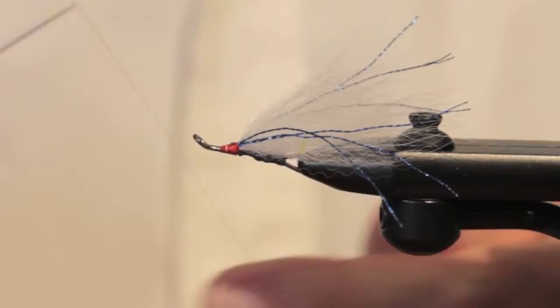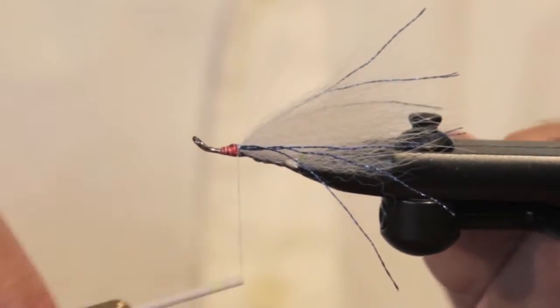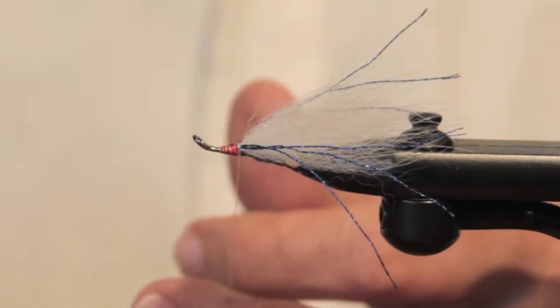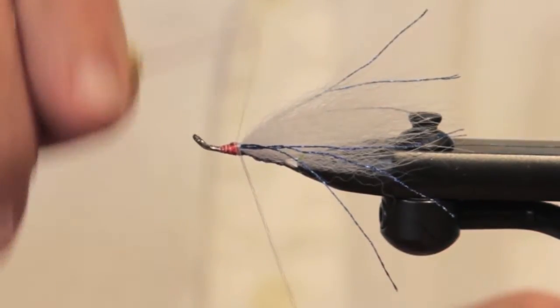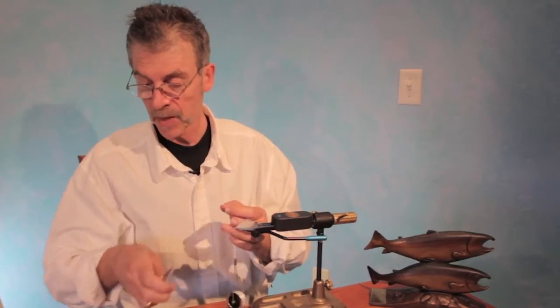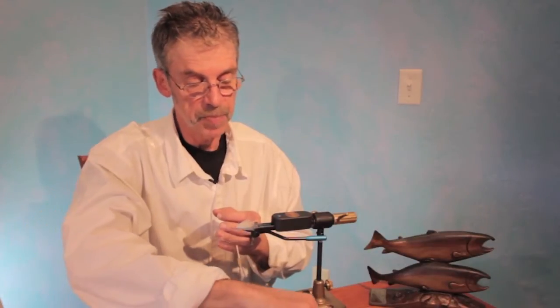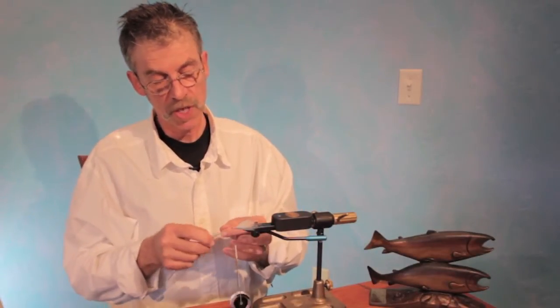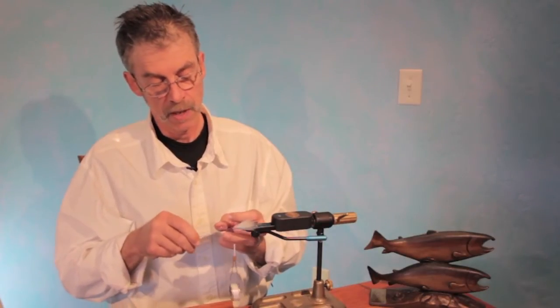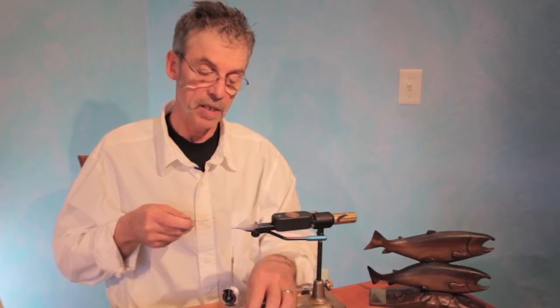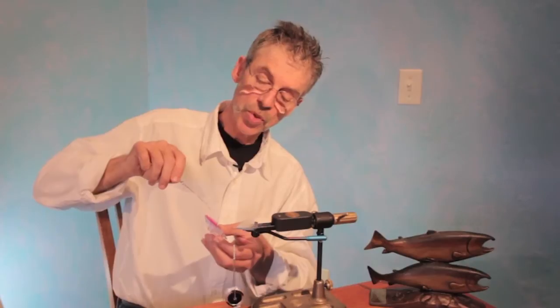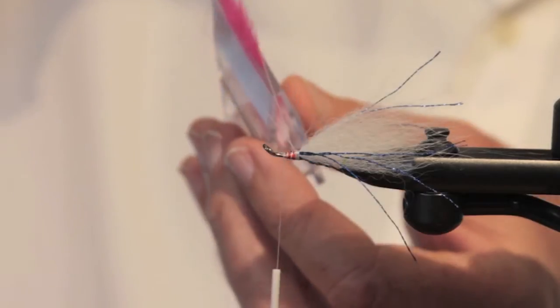So the second is going to be using a dubbing loop with arctic fox tail. And I have a piece of arctic fox tail held very nicely in my Petitjean magic tool, which you will see. It will come on camera in a moment. This is my Petitjean dubbing twister. Try to hold this up so you can see it. Hopefully it's in focus.